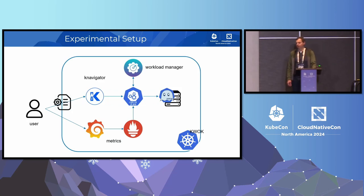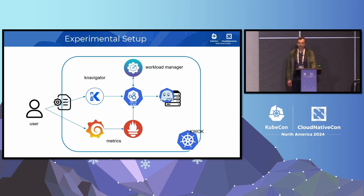This is our experimental setup. We are using a lightweight kind Kubernetes cluster. We deployed Quok to simulate GPU nodes. We deployed the Workload Manager that we are testing, and we deployed Navigator. Navigator is an open source tool developed at NVIDIA that allows users to create, submit, monitor, and control different testing scenarios. And finally, we deployed Prometheus, Node Resource Exporter, and Grafana to collect and display metrics.